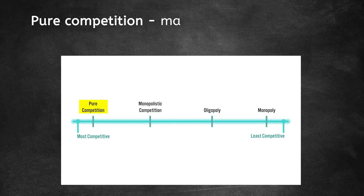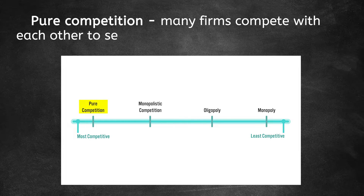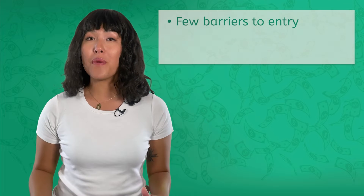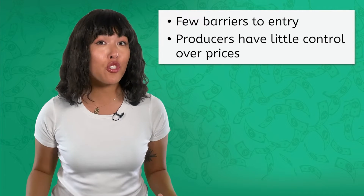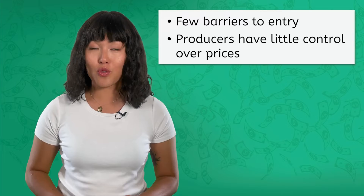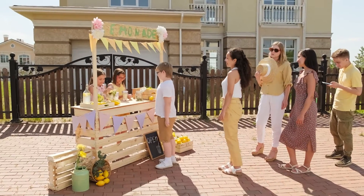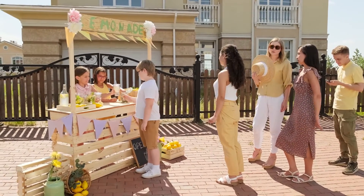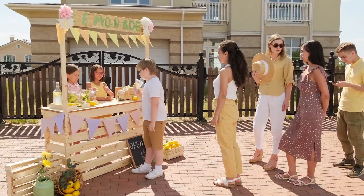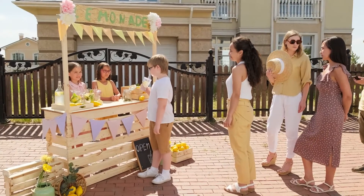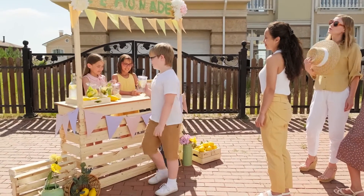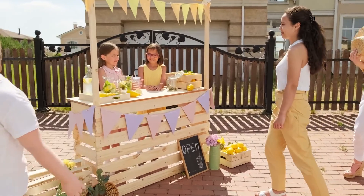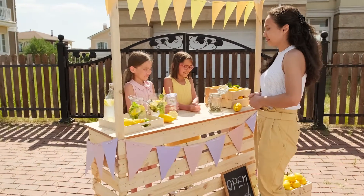In pure competition, many small firms compete with each other to sell very similar or identical products. In this structure, there are few barriers to entry, but producers have little control over the prices of their goods or services. Take a lemonade stand, for example. It is relatively easy to open one and sell lemonade. There can be many stands operating in a market, each selling a pretty similar product, and price is determined by what consumers are willing to pay and what producers are willing to sell the lemonade for.